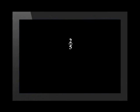Let's show how we change this fraction into a decimal and a percentage. 2 divided by 5 equals 0.4. 0.4 times 100 gives 40%. Why don't you try the next example on your own?